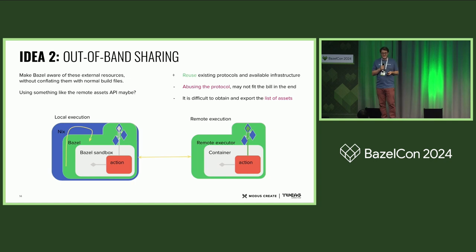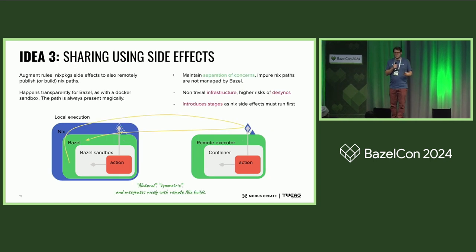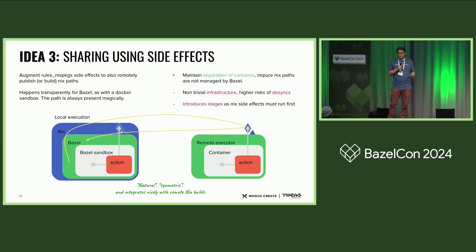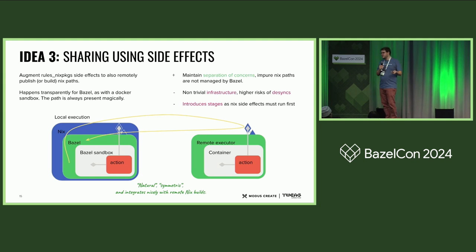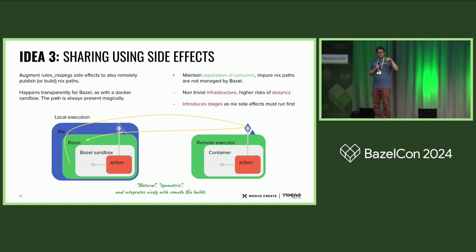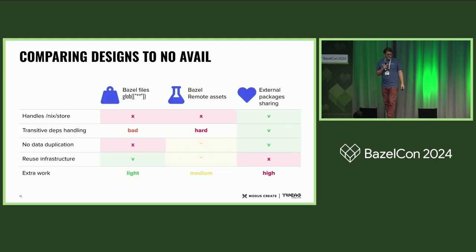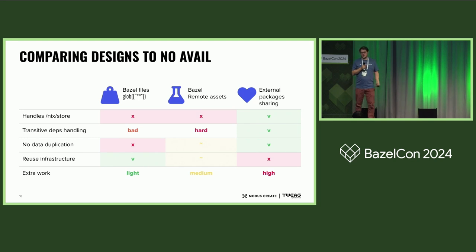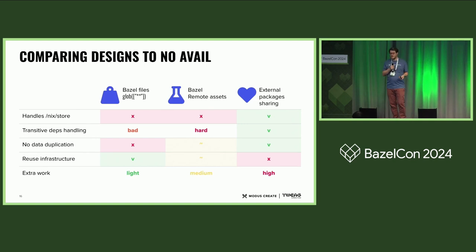The third idea is sharing using the same side effect we use to build Nix packages locally. If we already have a side effect of building the Nix package locally and making sure it's available, we can at the same time connect to a remote system and ensure it's built there and the file is available for anyone to use — in particular, available for all remote Bazel workers. Whenever the action is transferred to the remote execution environment, the Nix path will also be there. This requires way more infrastructure, but the first approach is too heavy and the second is experimental. The third one I know will work, and that's why we're here after two and a half years, and it's finally taking shape in a real production environment.